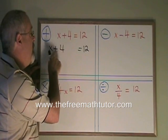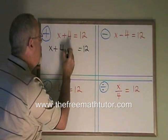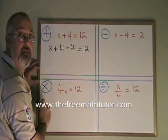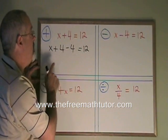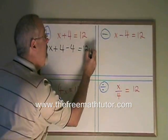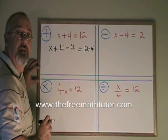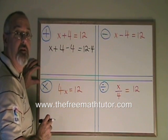If 4 is being added to the x, I subtract a 4, because these 4s will now cancel. But the rule of algebra is, if I'm subtracting a 4 from the left, I have to subtract the 4 from the right as well. Whatever I do on the left side of the equals, I have to do on the right side as well.